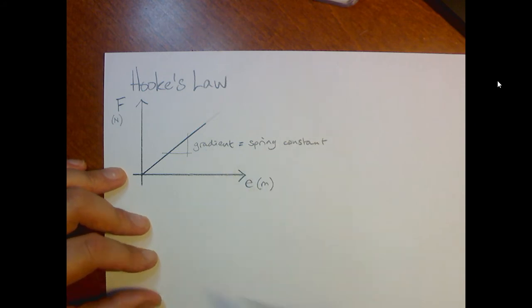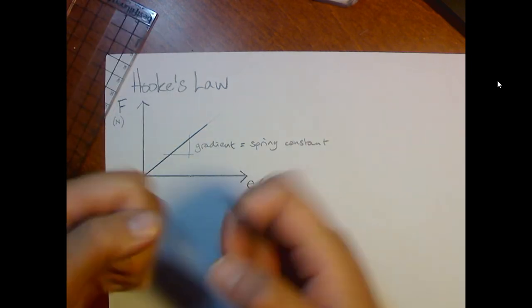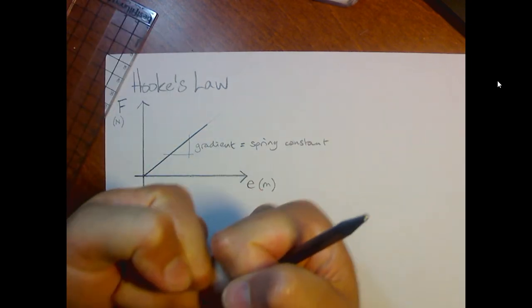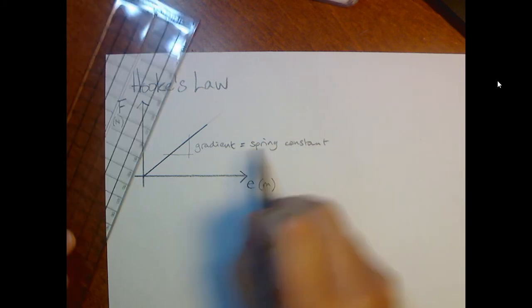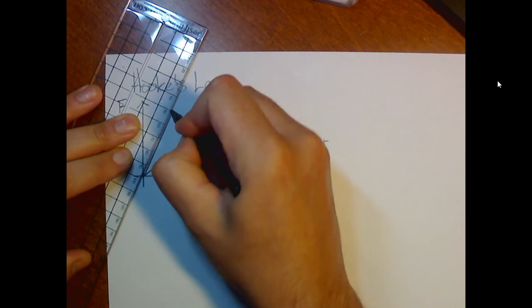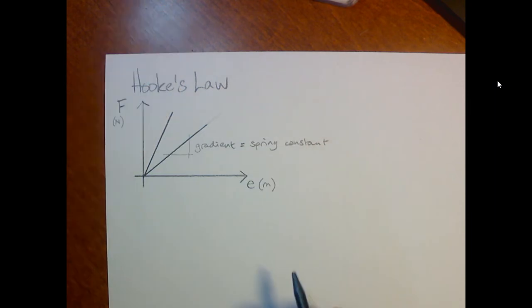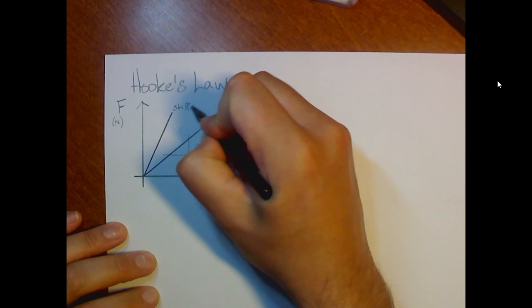As long as we've got the force on the vertical axis and the extension on the horizontal axis, this gradient will be equal to our spring constant. What that means is, for example, if I had a second spring that was much stiffer, it was much more difficult to stretch it, then it would have a higher spring constant, which means it would have a higher gradient, so it would have a steeper line. So this is a stiffer spring.